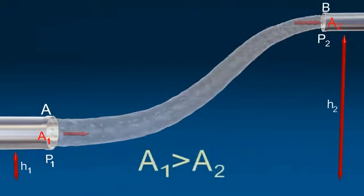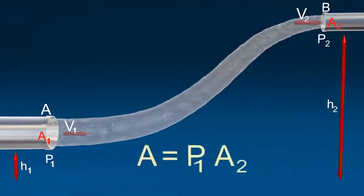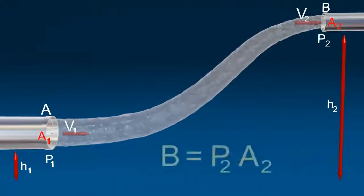A1 is greater than A2, so V1 is less than V2. The force on the liquid at A and at B.